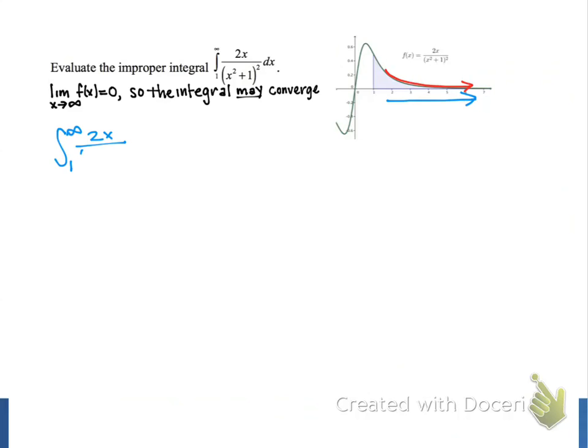Our first step in evaluating an improper integral is to replace the unbounded limit with a variable representing a finite value, and we'll use the variable b, and then we'll let b approach infinity, and we can now evaluate the new integral using the fundamental theorem of calculus.